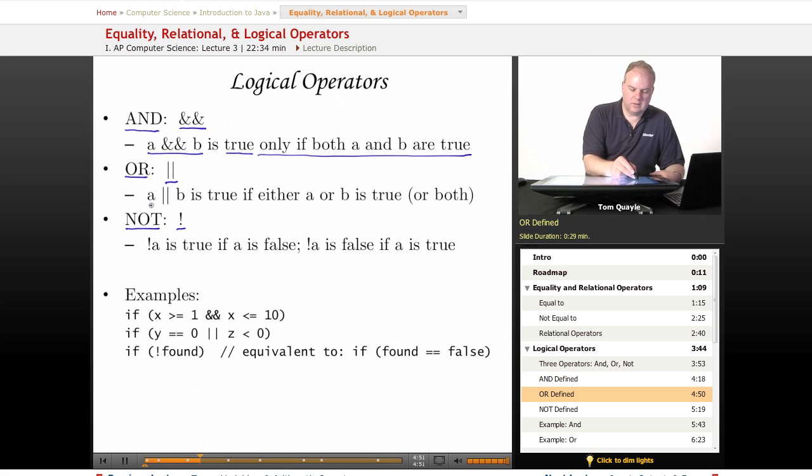Or, A or B is true if either A or B is individually true or if both of them are true. So if A is true, A or B is true. If B is true, A or B is also true. If both of them are true, A or B is true. A or B is only false where A is false and B is also false.